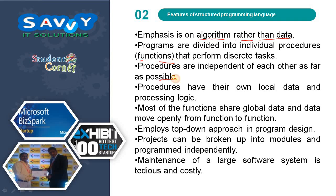Processes are independent of each other as far as possible. The project is divided into modules and the modules are divided into functions — this is the skeleton followed in structured oriented programming. Procedures have their own local data and processing logic. Most functions share global data, and data moves openly from function to function. If you declare it as a global variable, it can be accessed anywhere in the program.